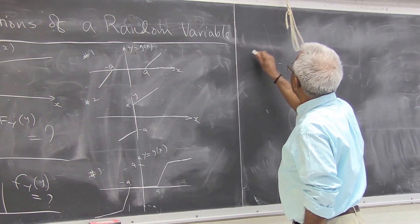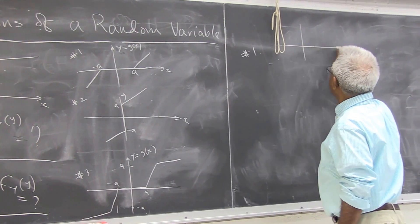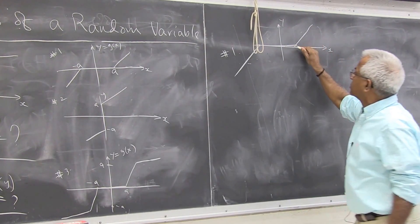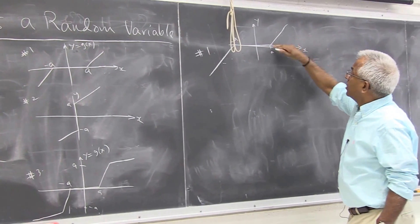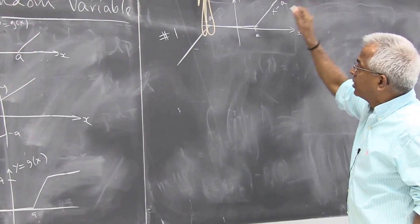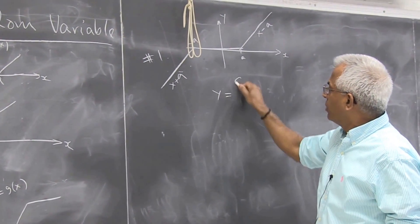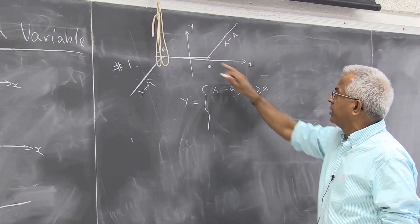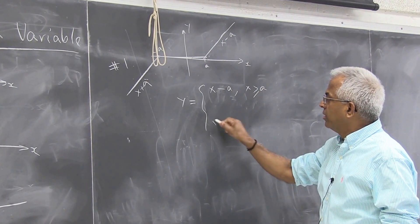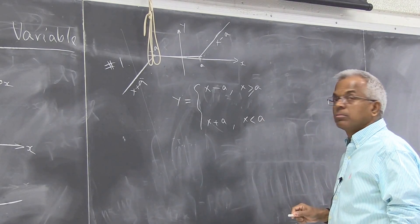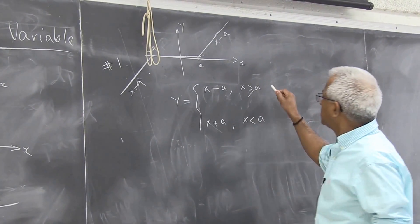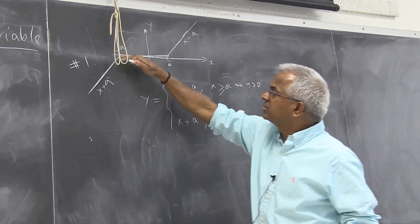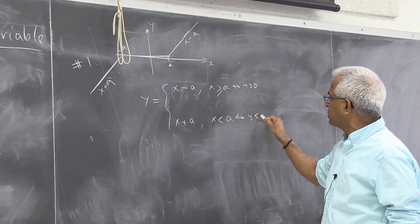Let me pick up problem number one. You have Y in terms of X — this is a 45-degree straight line, with X = -a and X = +a. Essentially, Y is given to be X - a if X is greater than or equal to a, and Y is X + a if X is less than -a. When X is greater than a, Y is positive, and when X is less than -a, Y is strictly negative.